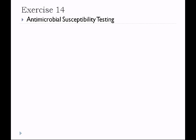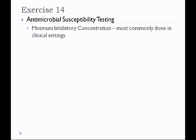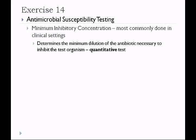Exercise 14 will be done in much the same way as exercise 13. It covers antimicrobial susceptibility testing done in the clinical laboratory. The most common test is the MIC, or minimum inhibitory concentration, which determines the minimum dilution of an antibiotic necessary to inhibit the test organism. This is a quantitative test because it gives a number value indicating how much antibiotic the patient should receive.